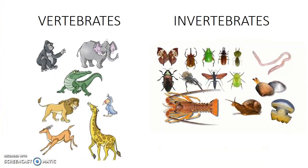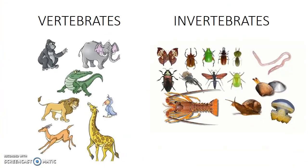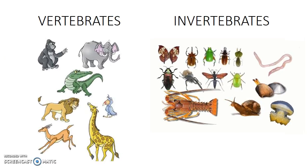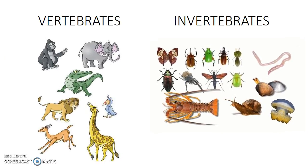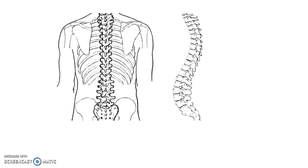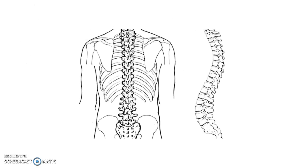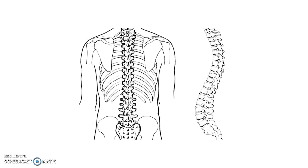The first one is the vertebrates, and the other is the invertebrates. As you know, we have a backbone, whose name is the vertebral column. This bone is the main reason for dividing the animal kingdom into two big groups.